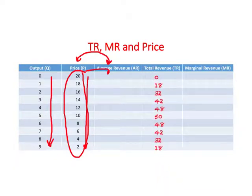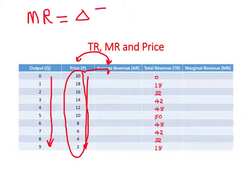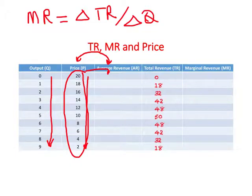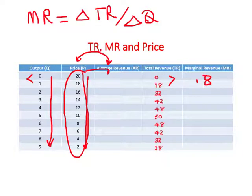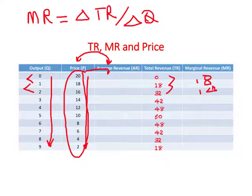Based on these total revenue figures we can calculate marginal revenue. Marginal revenue is the change in total revenue divided by change in quantity. When the firm decides to move from 0 to 1 unit of output, total revenue changes by 18, so marginal revenue is 18. When the firm has already sold one unit and decides to sell the second unit, the change in total revenue is 14, so marginal revenue is 14.